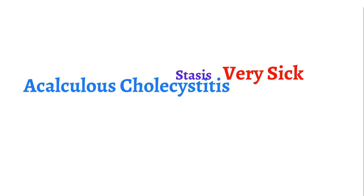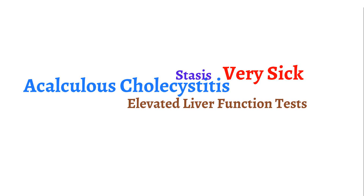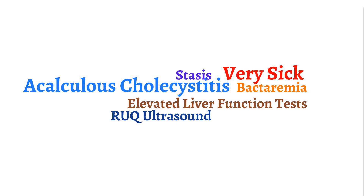Unlike acute cholecystitis, acalculous cholecystitis can be associated with elevated liver function tests due to bile stasis. Acalculous cholecystitis can also lead to bacteremia, so it is important to obtain blood cultures in these patients. The first step in diagnosis is a right upper quadrant ultrasound, which is the easiest test with good sensitivity and specificity.